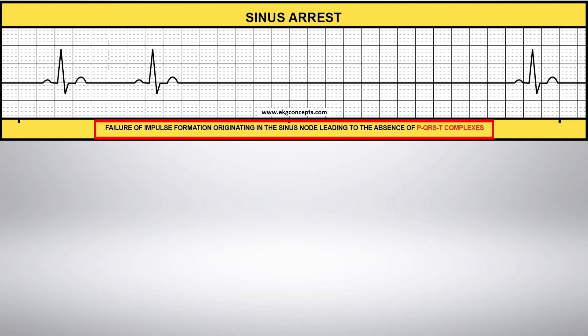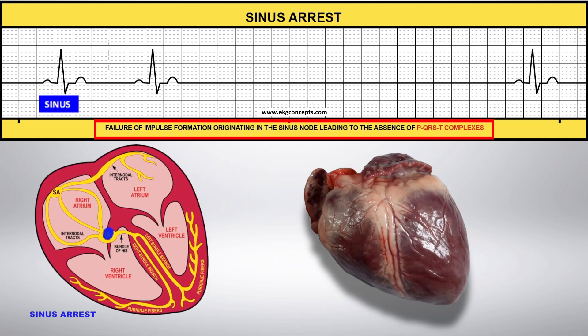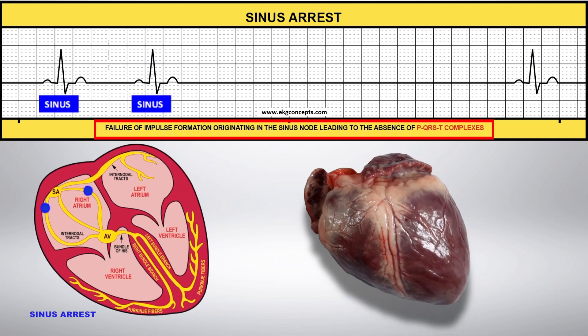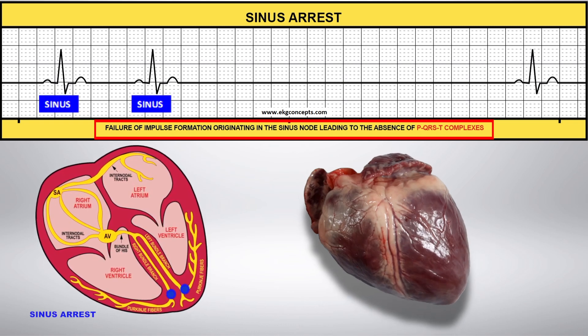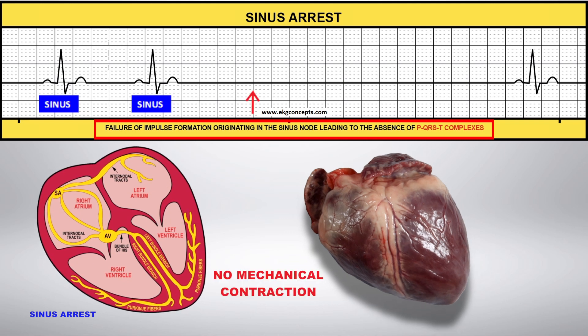Sinus arrest occurs when the failure of three or more impulses originating from the SA node leads to the absence of the P-wave, the QRS complex, and the T-waves. During an arrest or a pause, there is no mechanical contraction or heartbeat.